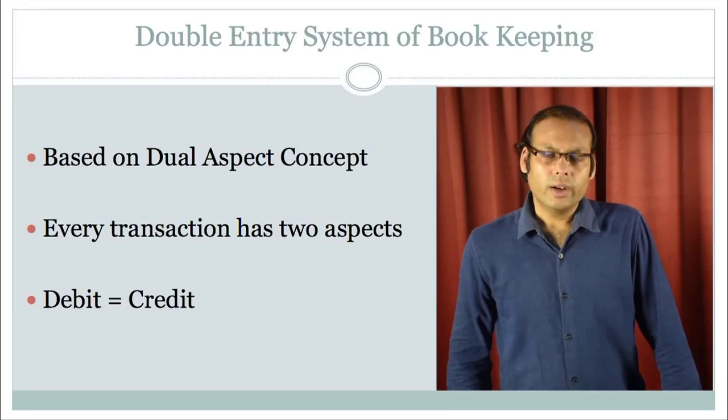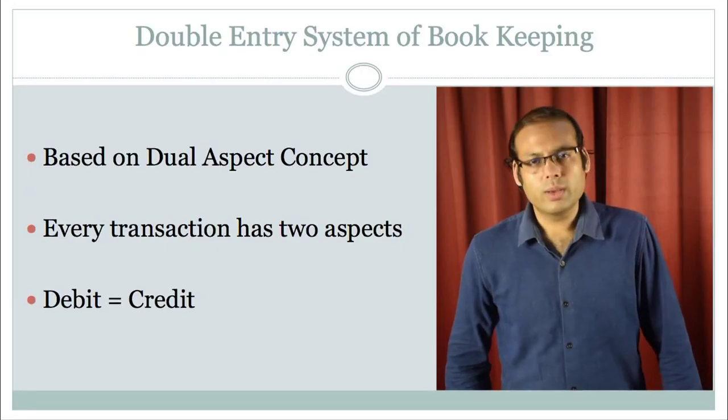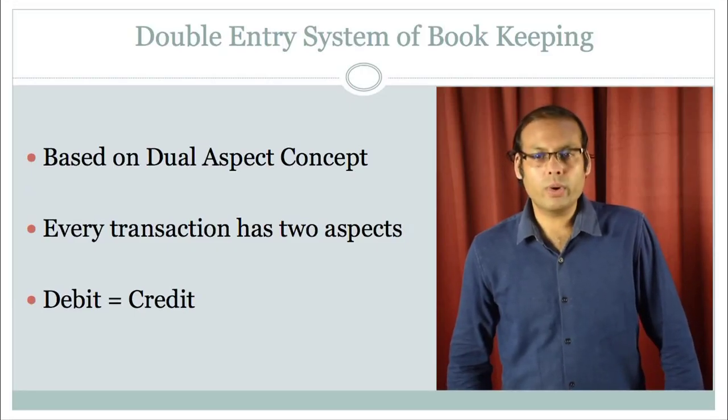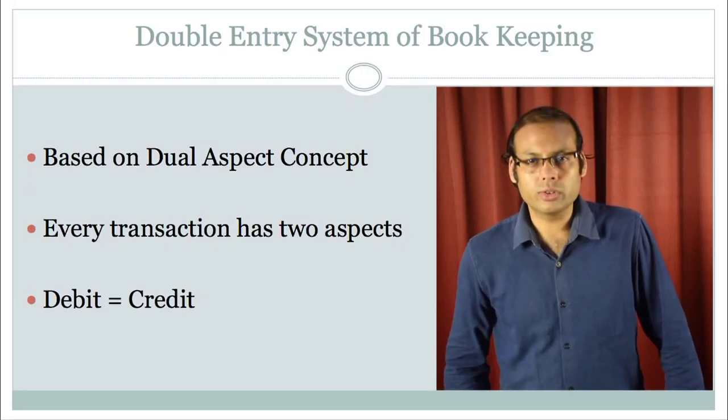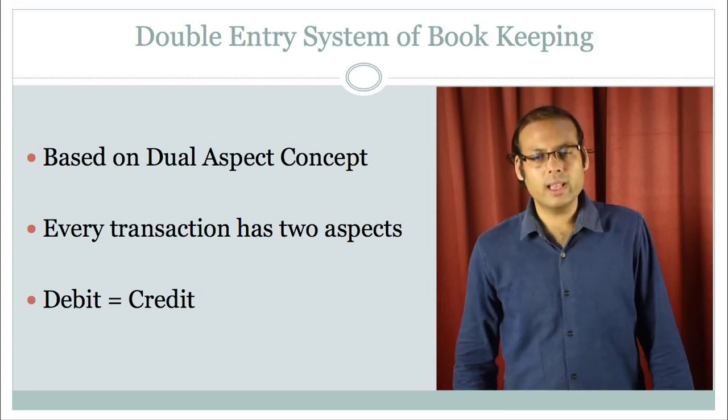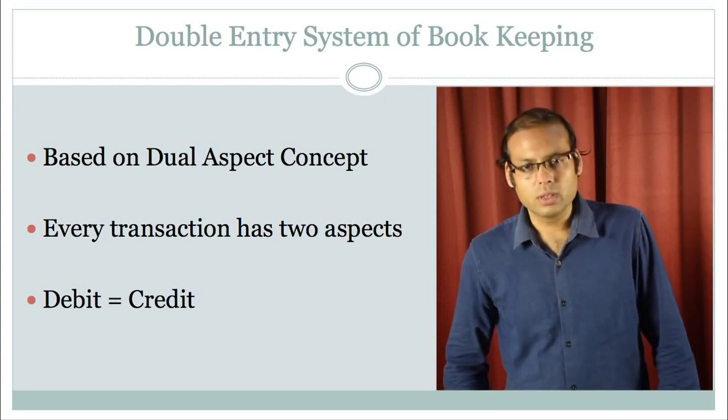Generally, when we record the business transactions in books of accounts, we follow a particular system. That system is known as the double entry system of bookkeeping. This double entry system of bookkeeping is based on a particular accounting concept, known as the dual aspect concept.